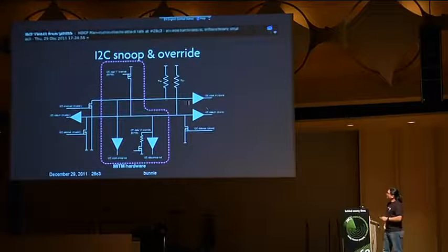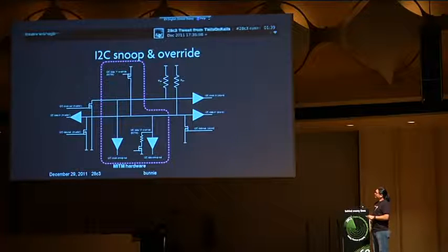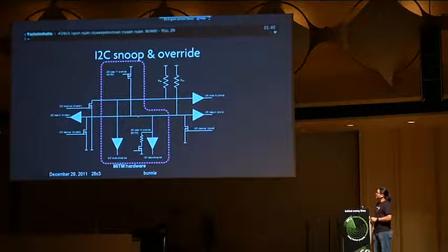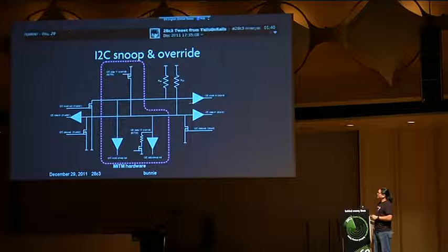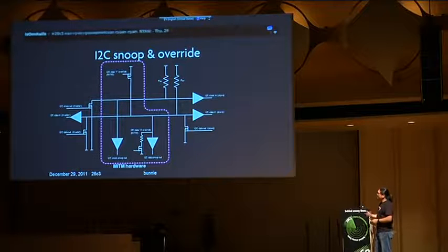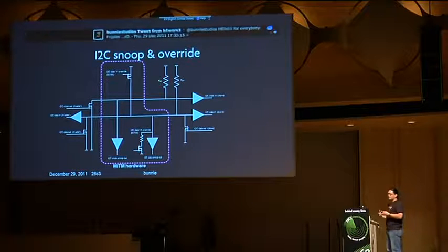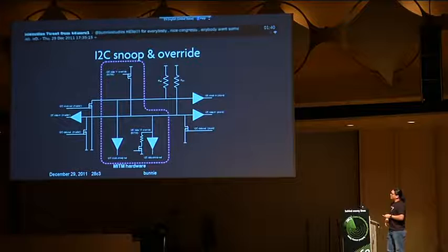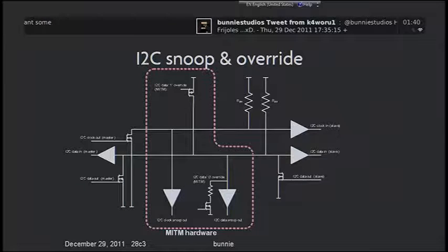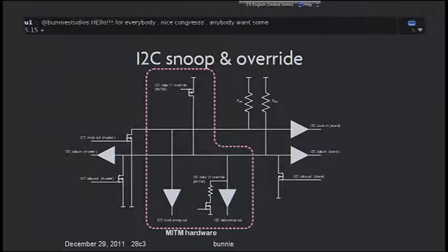This is a circuit that enables the snoop and override. It's a standard I²C circuit with a driver, receiver, and a pair of pull-ups. Snooping the clock is easy — you just listen to it — and snooping the data is easy. To override the data, because it's an open-collector bus, you have a pull-down transistor. To override a one, you essentially have to override an active zero driver, so we put a big fat FET on there, with a current-limiting resistor so in case they're both on at the same time you don't burn out the board. It works, and it shouldn't have any impact on the reliability of the link.